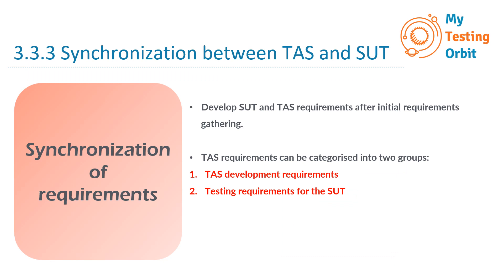The last point in synchronization of requirements is ensuring consistency and completeness. Whenever we make updates or changes to either the SUT or TAS requirements, it's crucial to ensure consistency between the two sets of requirements — we need to make sure that TAS requirements align with the SUT's features and that there are no contradictions. We must also check that all SUT requirements we plan to test using the TAS have corresponding, well-defined test requirements in the TAS documentation, ensuring nothing gets missed and that testing is comprehensive.